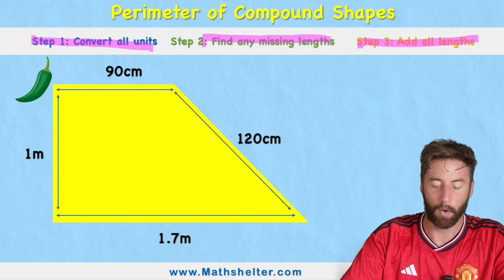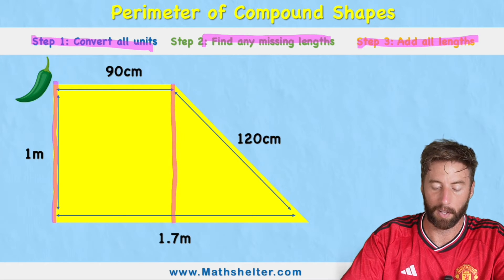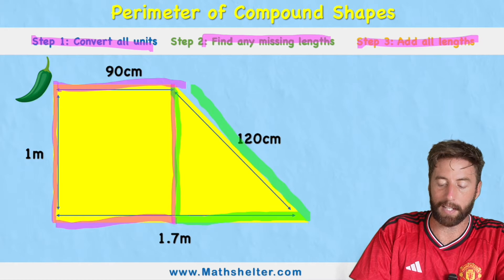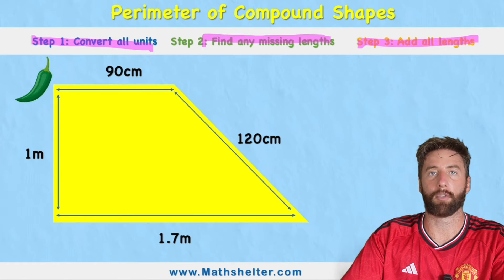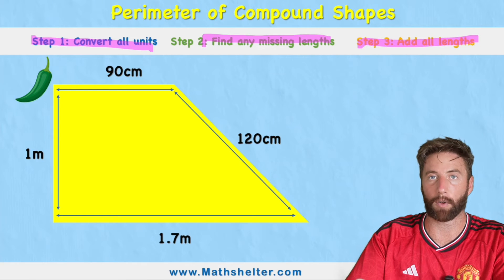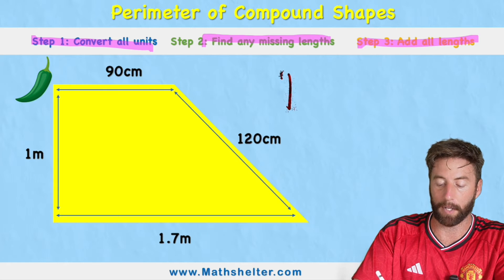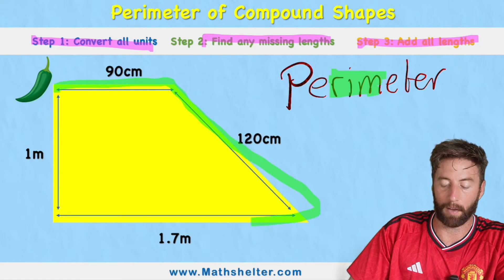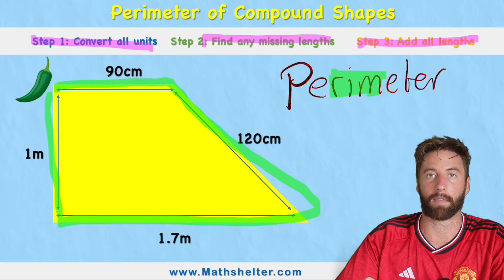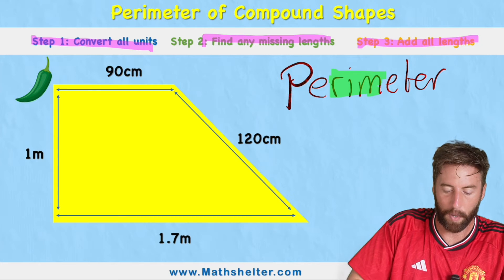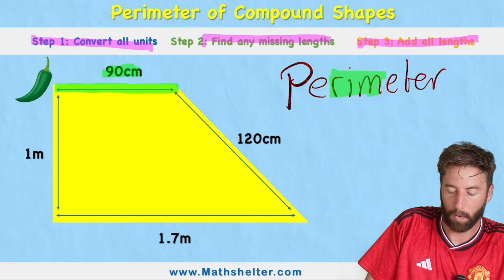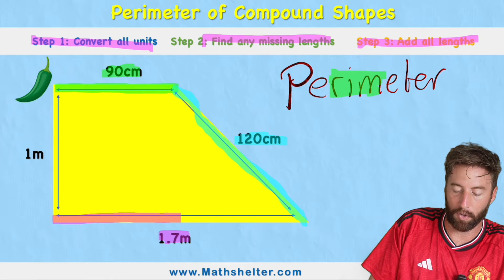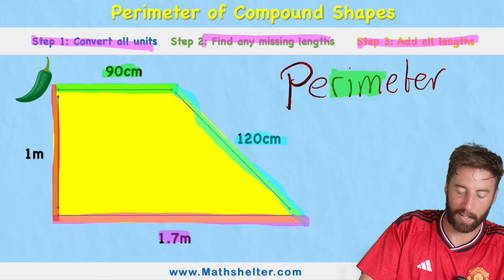If we take a look at this first shape, we should be able to see that we had an original rectangle — this little pink rectangle — and there was an original triangle, and they've been pushed together to form this compound shape. We need to remember that perimeter means the measurement around the outside of our shape. A good way to remember that is the word 'rim' inside 'perimeter' — the rim is the outside, like the rim of a cookie jar. We can see our measurements: 90 centimeters for the top length, 120 centimeters down the side of the triangle, 1.7 meters across the bottom, and 1 meter down this side.